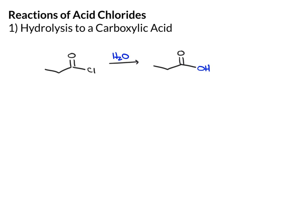If you look back at our chart, it's type 2D-like. We're taking our acid chloride with water and converting that to the carboxylic acid. We know this is going to be relatively slow as written. What you can actually do is add a base like pyridine, but we're not going to classify this as true basic conditions because it's not a negatively charged base.